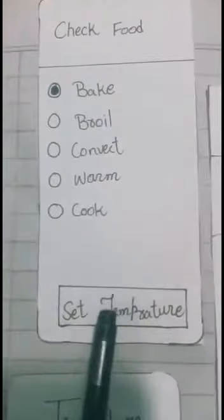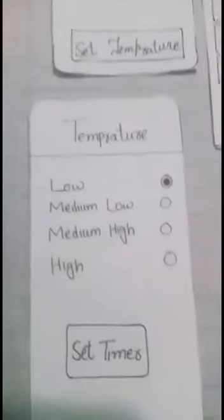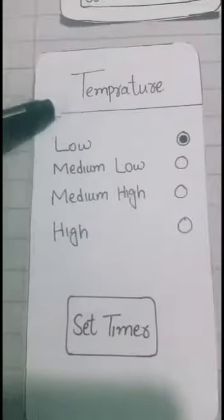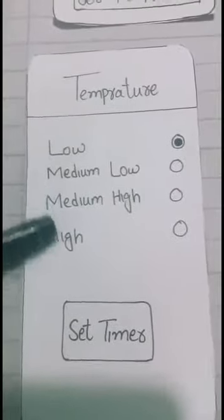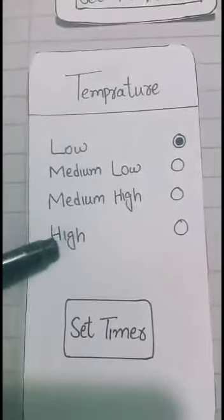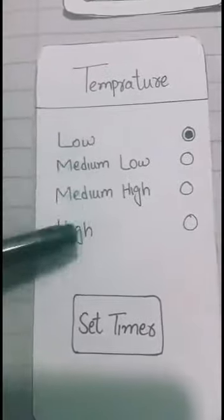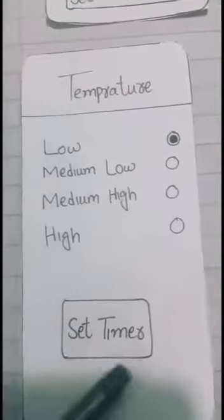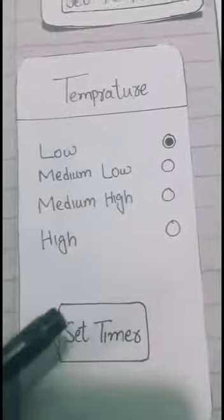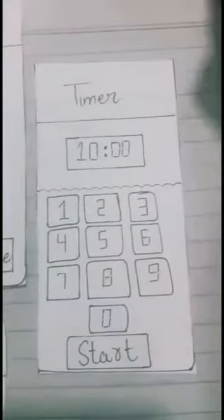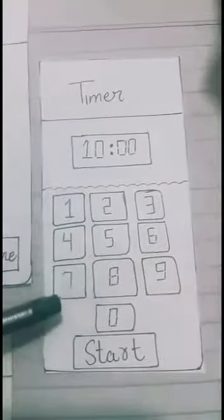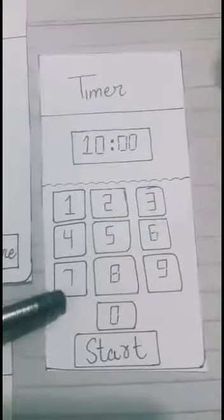Then click on the set temperature button. By clicking on the set temperature button, this screen appears in which temperature options like low, medium low, medium, high, and high are available. After selecting any option, you can then click the set timer button. After clicking set timer, the timer screen appears.